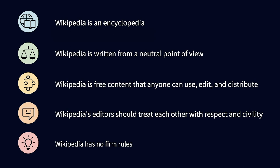Number five: the last rule of editing Wikipedia is there are no firm rules. There are lots of policies and guidelines, but these can actually change at any time, depending on the consensus of the editing community. So you can actually be quite bold with your editing, and if you make mistakes, it's fairly easy to undo them.